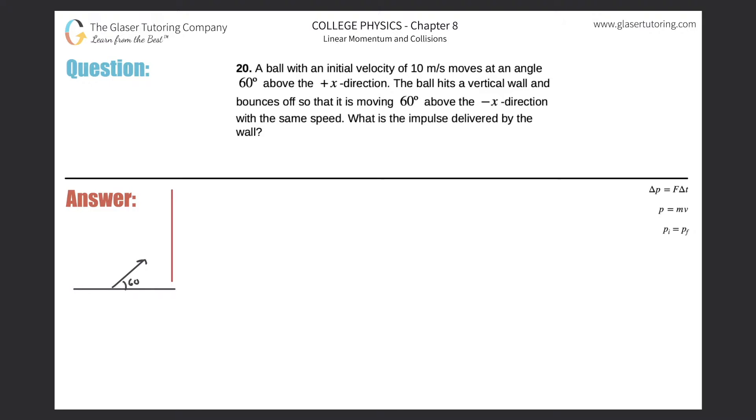Number 20. A ball with an initial velocity of 10 meters per second moves at an angle 60 degrees above the positive x direction. The ball hits a vertical wall and bounces off so that it is moving 60 degrees above the negative x direction with the same speed. What is the impulse delivered by the wall?